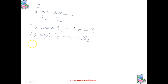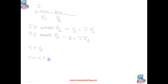The potential difference V across the combination of R1 and R2 is given by V1 plus V2. Hence, we can write V = V1 + V2, which is the potential difference across the combination. That equals I times (R1 + R2).